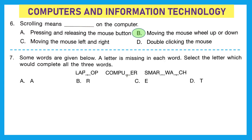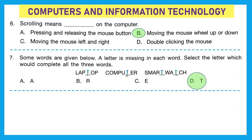Question 7: a letter is missing in each word — select the letter which completes all three words. The first word is LAP-OP, which looks like LAPTOP. The second is C-O-M-P-U-T-E-R, that's computer. The third is S-M-A-R-T-W-A-T-C-H, that's smartwatch. The missing letter in all three is T, so our answer is D, that is T.